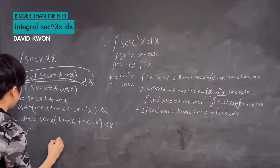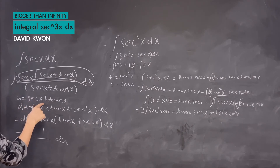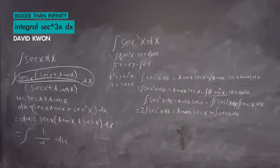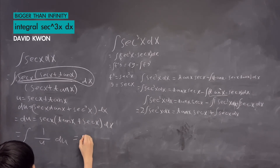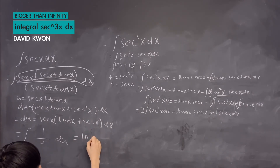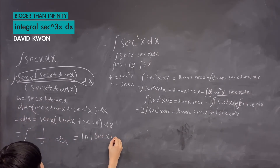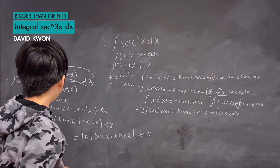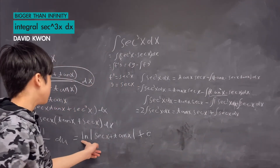So the du removes the top part, and now we only have du over u, where u equals secant x plus tangent x. The integral of one over u is equal to ln|u|, and since u was secant x plus tangent x, we have found that the integral of secant x dx equals ln|secant x plus tangent x|.